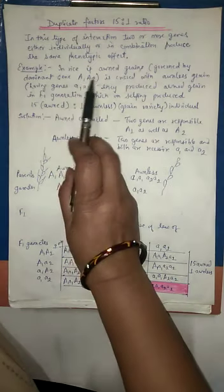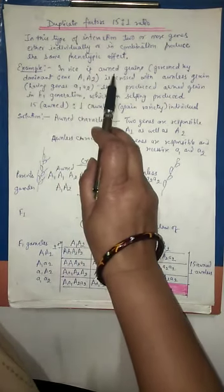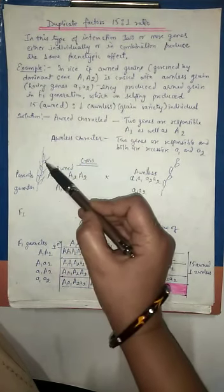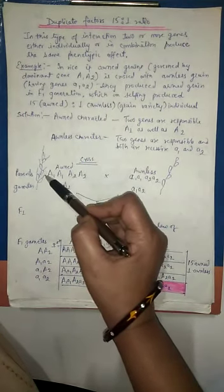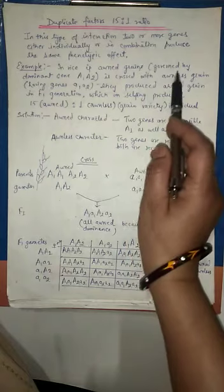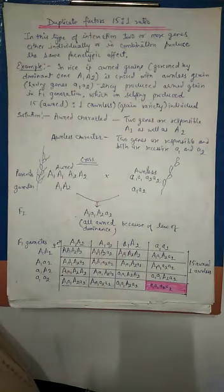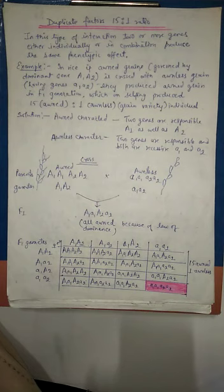if a rice variety having orned grains, as you can see these orns on the seeds, which is governed by a dominant gene set A1 and A2, you can also write it as A and B, both capital. Here I have taken A1 and A2 genes, which are two separate genes, but both are responsible for orned character of the grain.